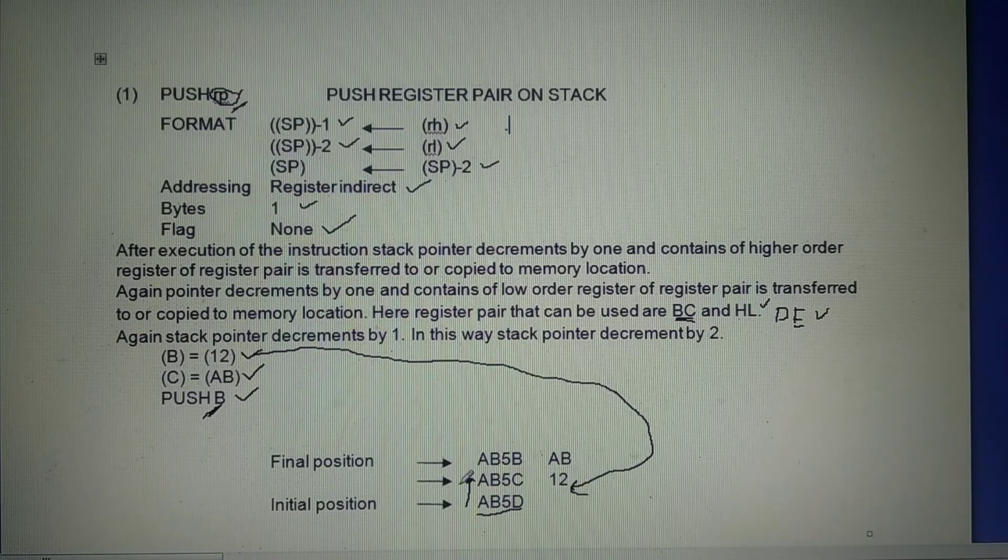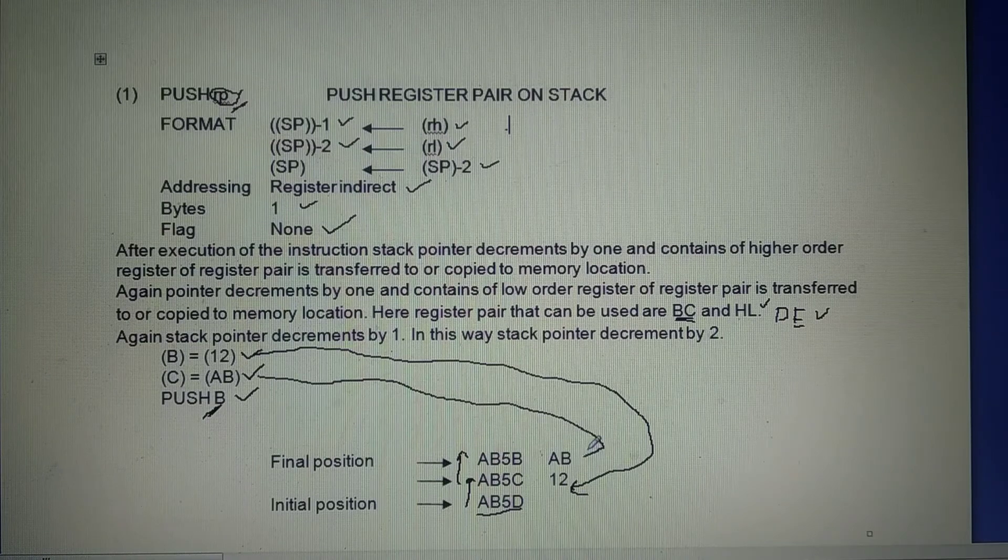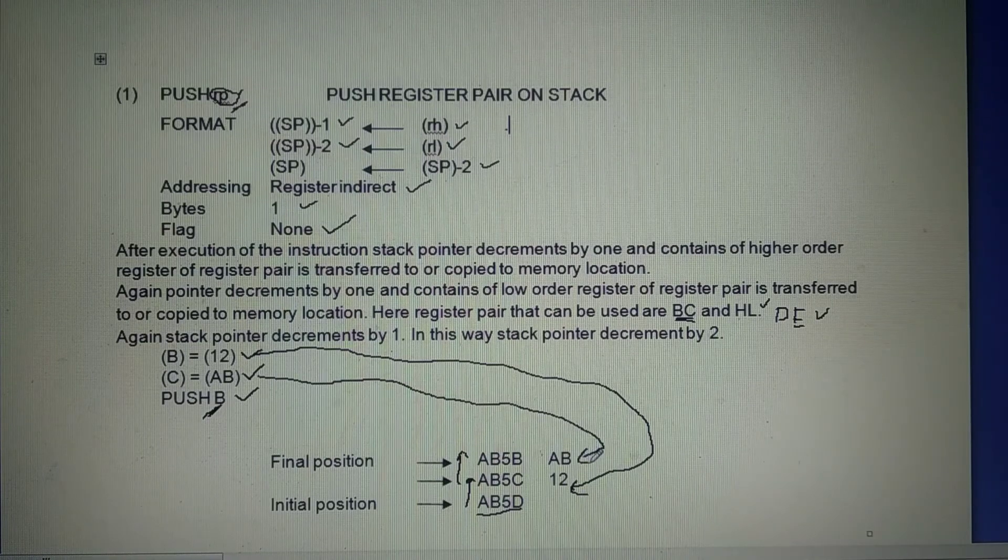Again, stack pointer decrements by one. And it becomes AB5B and content of low-order register of register pair is stored in that memory location.